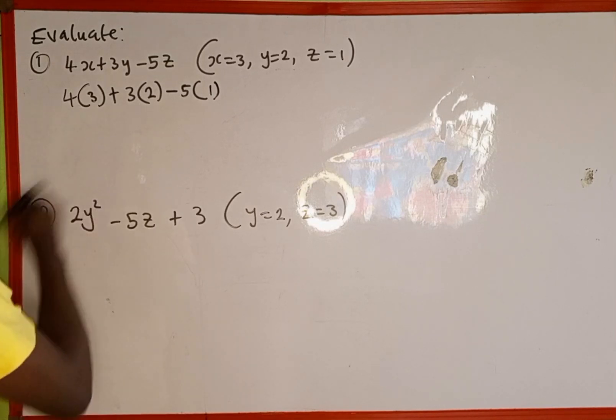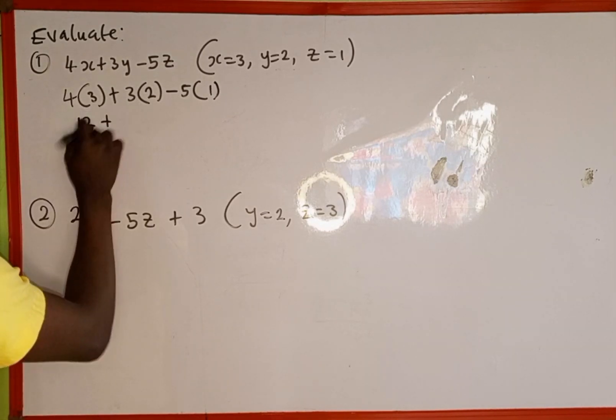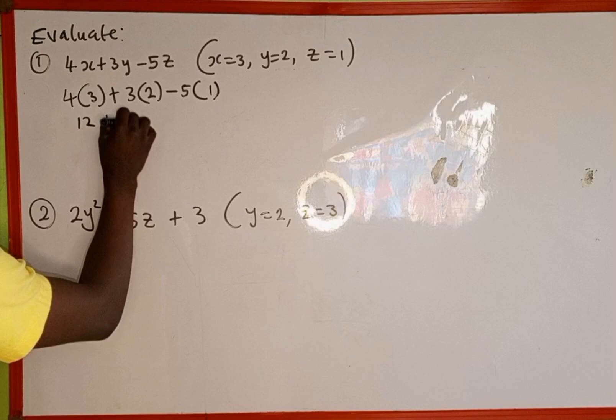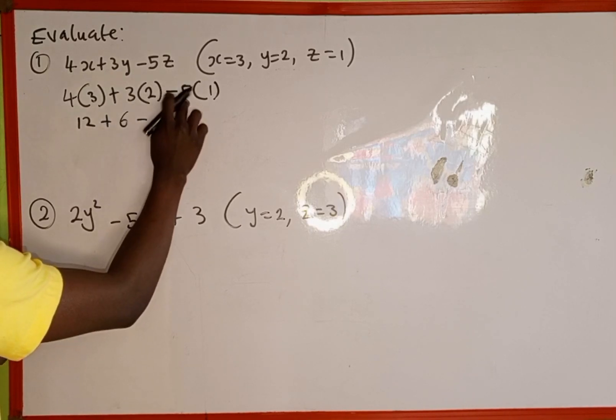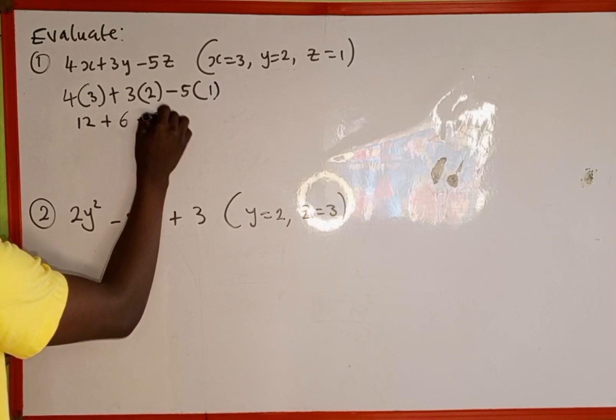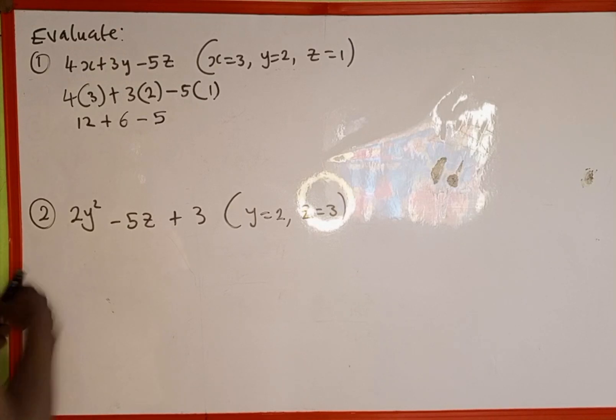This gives us 12 + 6 - 5. Now this is addition and subtraction; they have equal priority if you recall your BODMAS.